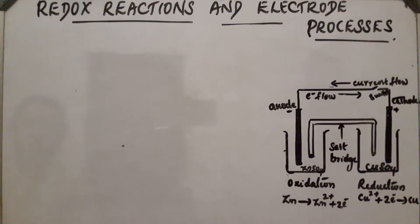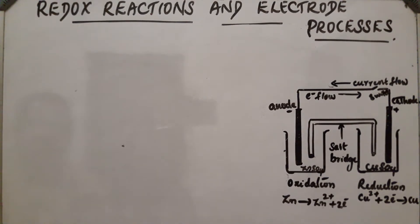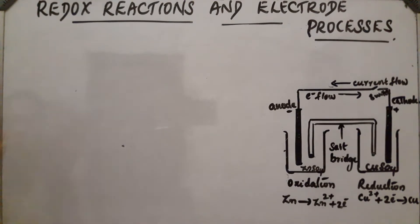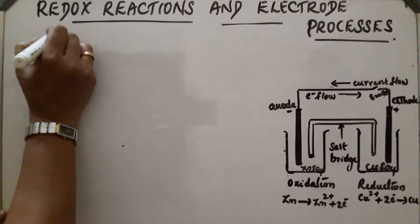Redox reactions and electrode processes: when a zinc rod is dipped in copper sulfate solution, zinc gets oxidized to Zn²⁺, and copper ions get reduced to copper. In this process, direct transfer of electrons takes place.